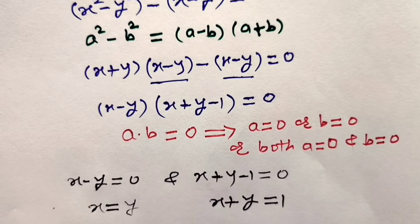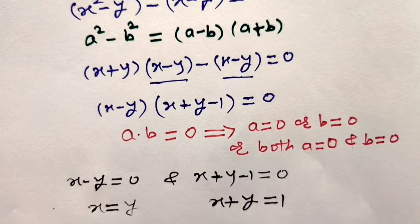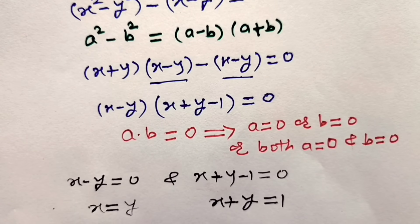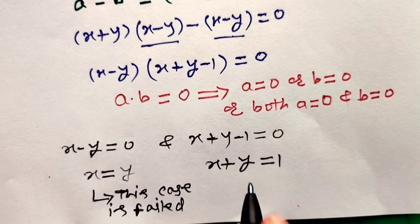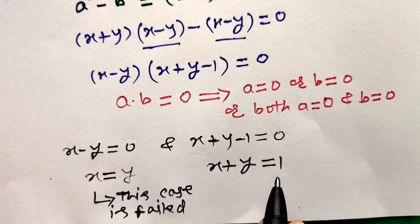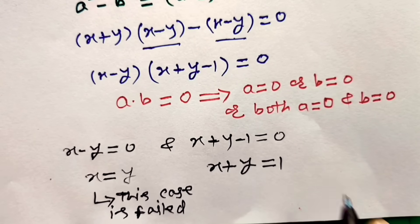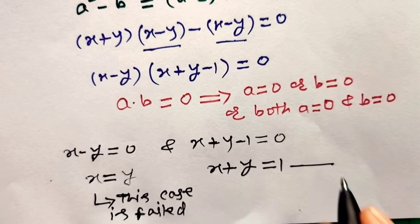But in the statement of our problem, it is given that x is not equal to y. So the case x equals y is failed. Now we have to assume only the second result: x plus y is equal to 1. Consider this as equation number 4.